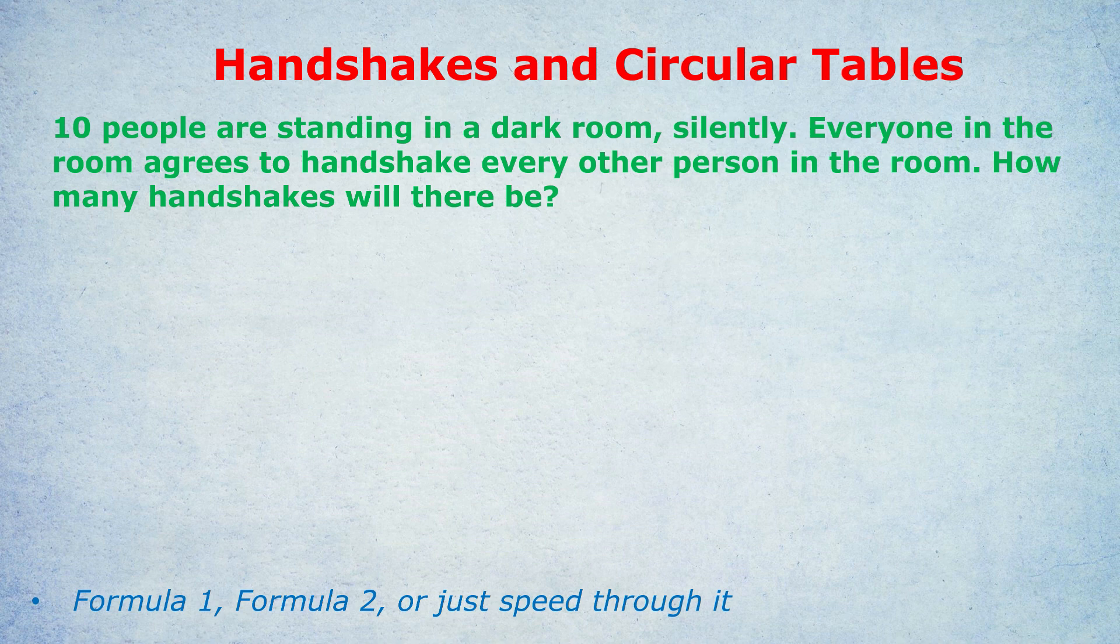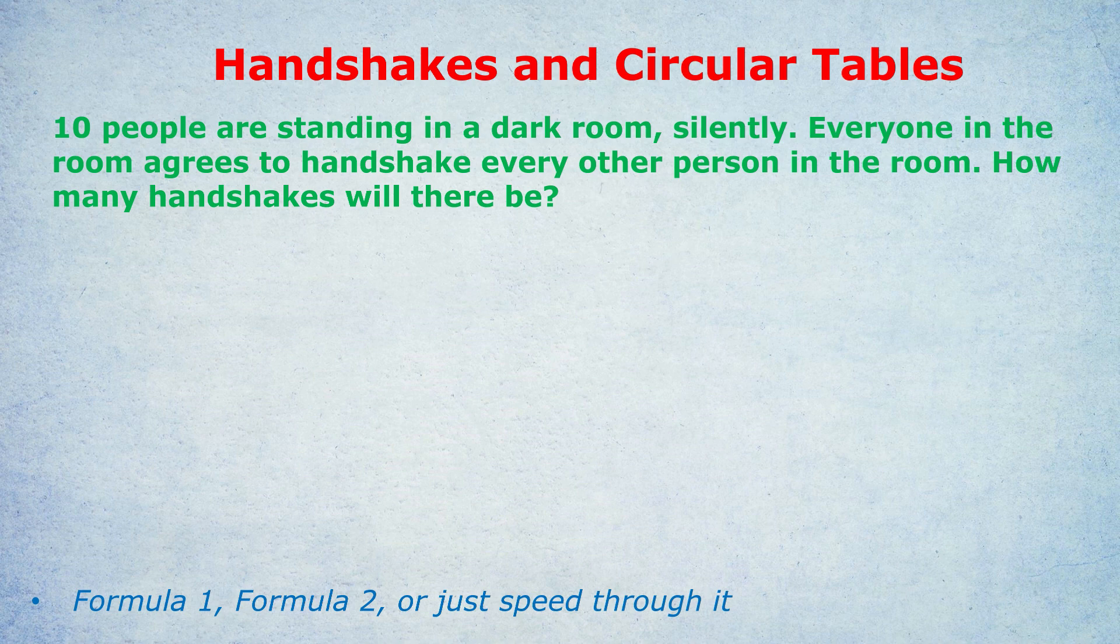Let's take this question: Ten people are standing in a dark room silently. Everyone in the room agrees to handshake every other person in the room. How many handshakes will there be? A very common misconception is to do 10 people times 10 handshakes equals 100, or more commonly, 10 people and each person will shake nine other hands, so 10 times 9 equals 90 handshakes. Both of those are wrong.